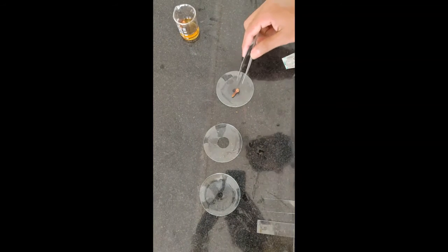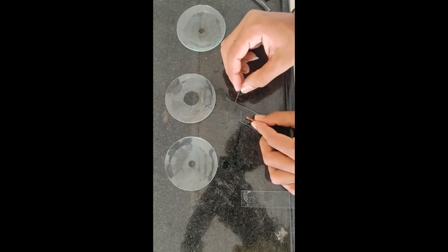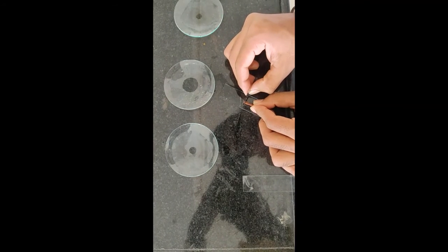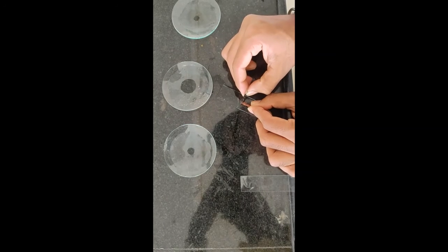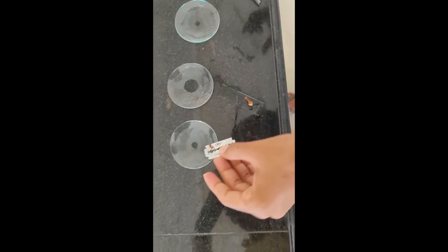Now transfer the clove bud to the watch glass containing water. Then remove the end tip of the clove bud and take the thin transverse section, and transfer it to the watch glass containing water.